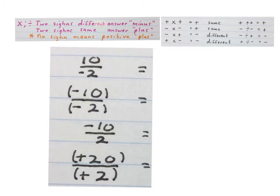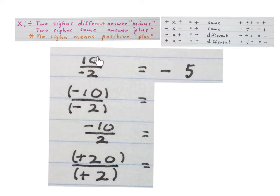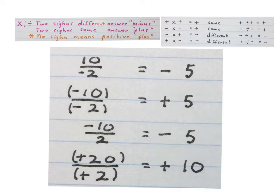Please stop the video again and try and get the answers to these division sums. Yes, 10 divided by minus 2 is minus 5. It's a plus in front of the 10 divided by a minus, which gives a negative answer, and 10 divided by 2 is 5. Well done if you got the other three right.